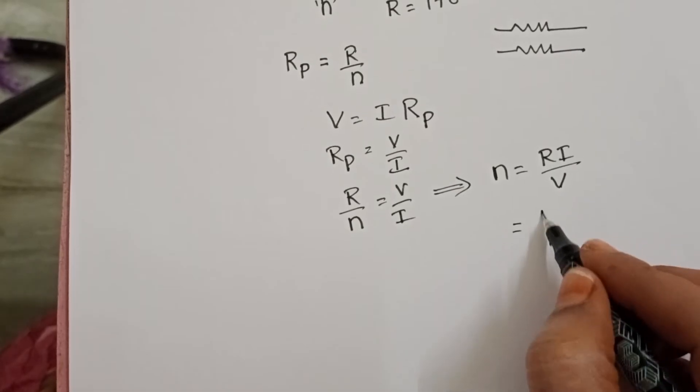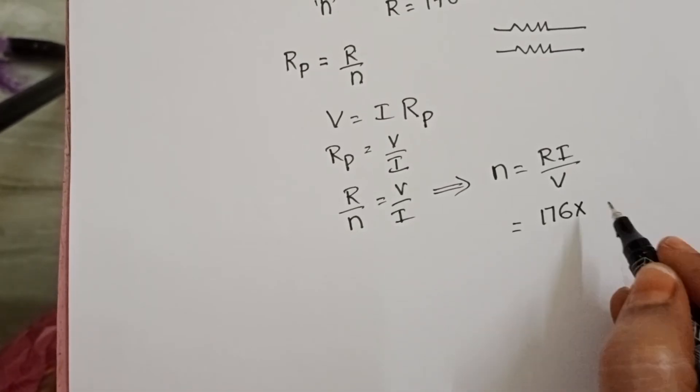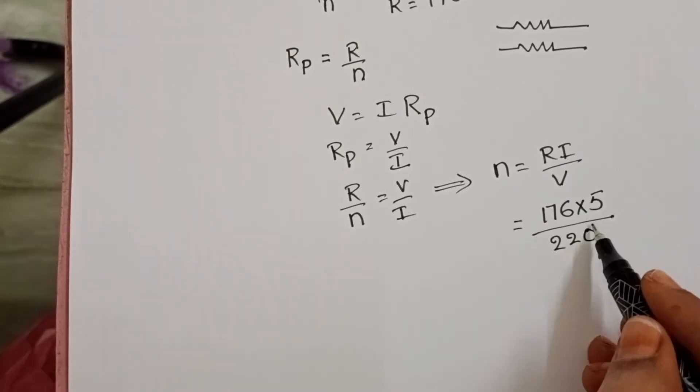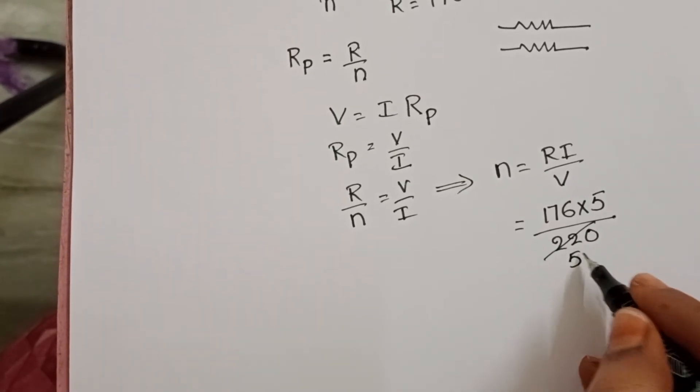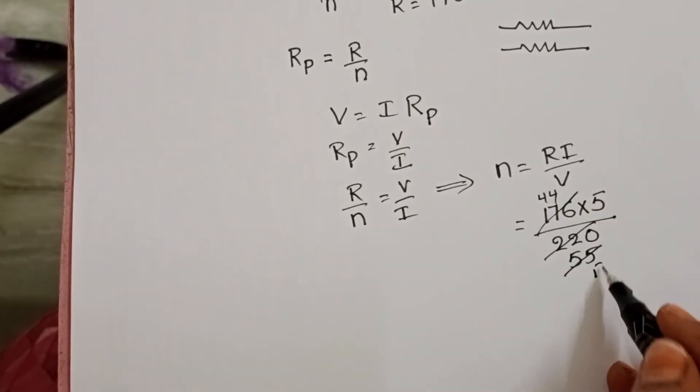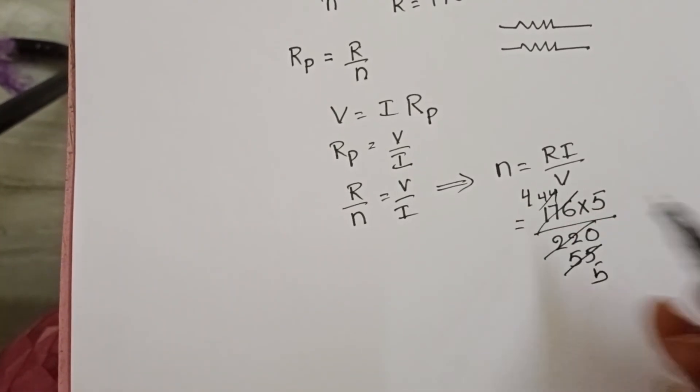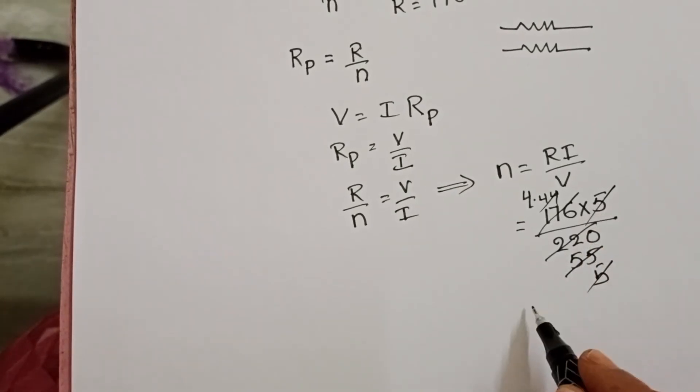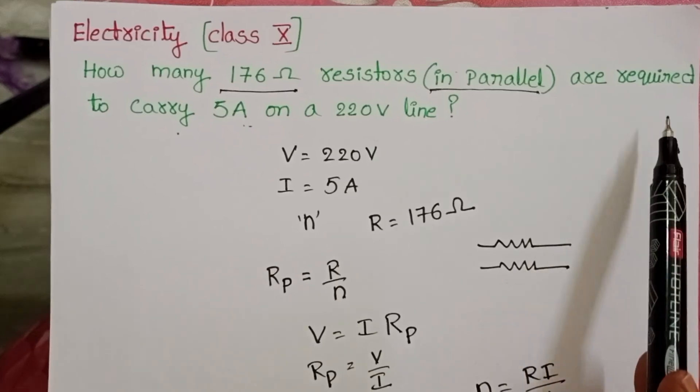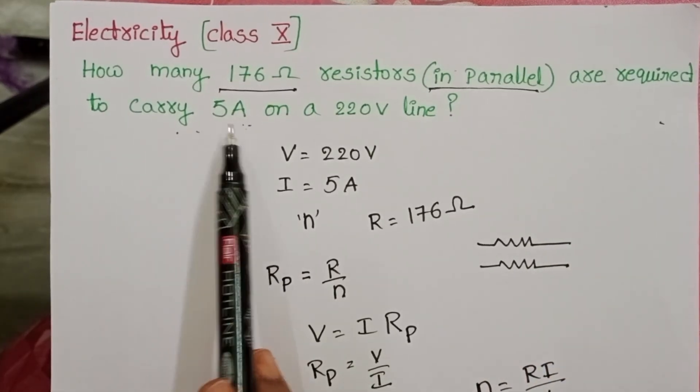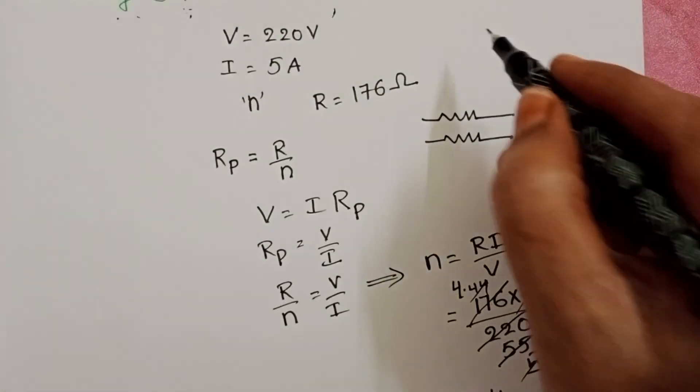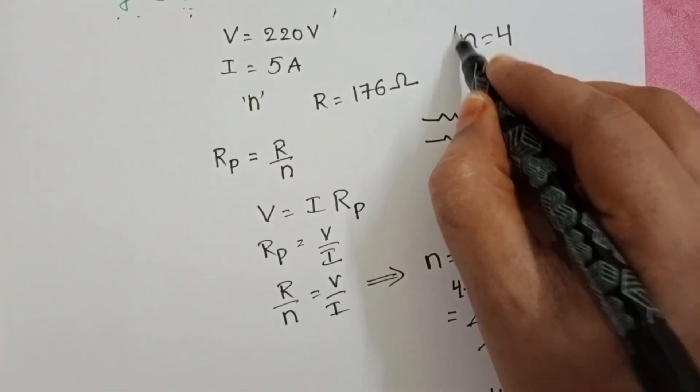Substituting the values: R is 176 ohms, current is 5 amperes, and potential difference is 220 volts. Therefore, N equals 4. Four resistors are required to carry 5 amperes current in the circuit.